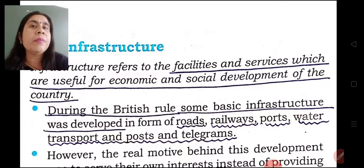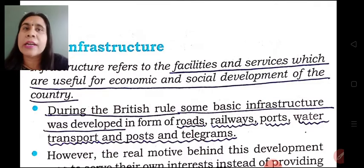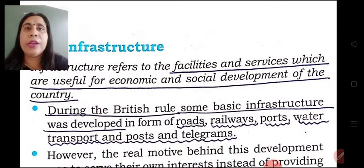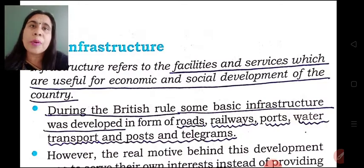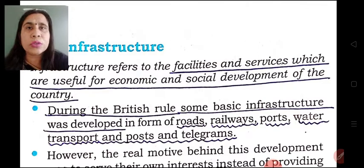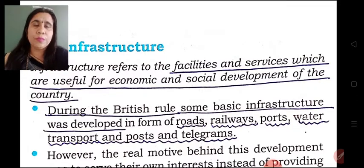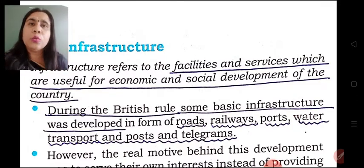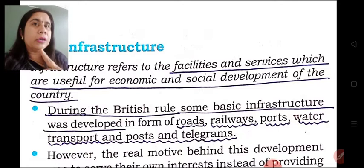On the other hand, there are some institutions which help in earning an income indirectly — they help in the development of human resources, such as schools which give educational qualifications to students who are prepared to earn an income in the near future. Another example of social infrastructure is hospitals, which provide medical facilities and give a healthy human resource for earning an income. Infrastructure thus includes all those institutions which help in the development of the country economically and socially.